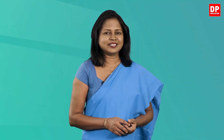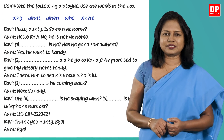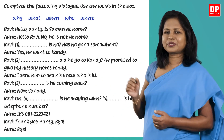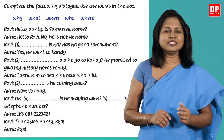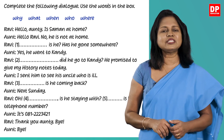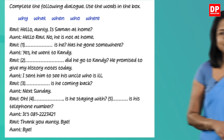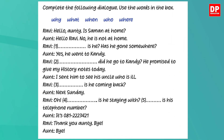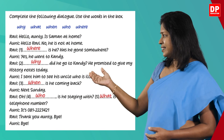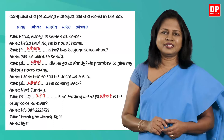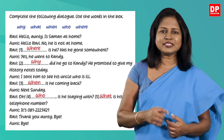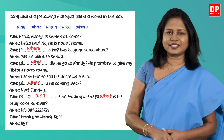Okay children, now let's do an activity from one of the past O-level papers. Look at this dialogue. You have to complete this dialogue using the words in the box. Pause the video and do it now. Let's see how you have done it. Here is the complete dialogue — let's read it together and you can see whether your answers are correct.